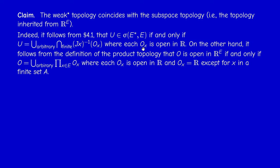On the other hand, a set in R^E is open if it's an arbitrary union of basis elements. The basis element for the product topology is a product of open sets where almost all sets equal R — that is, O_x = R except for x in a finite set A. When we restrict this topology to E*, we intersect a basis element with E*. The target is to prove that the open sets U in E* and E* ∩ O coincide.